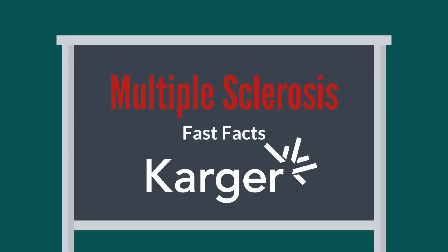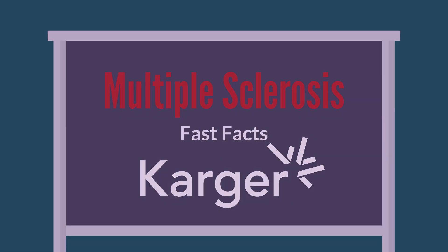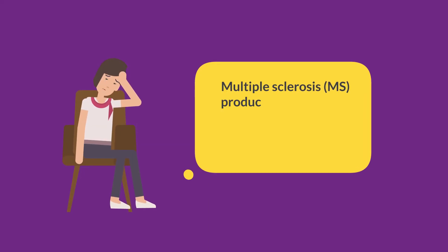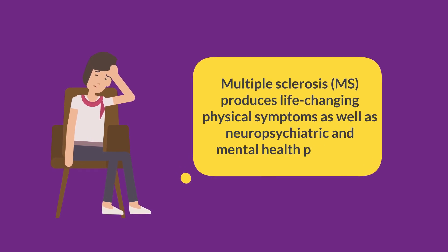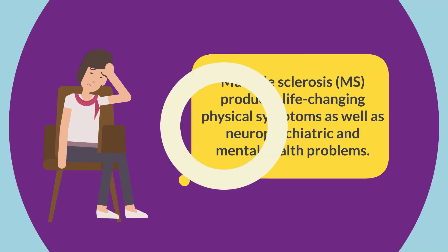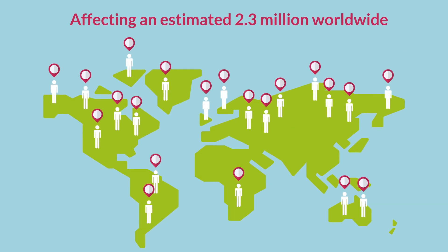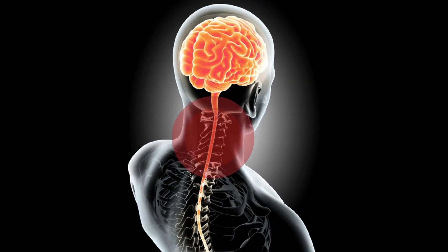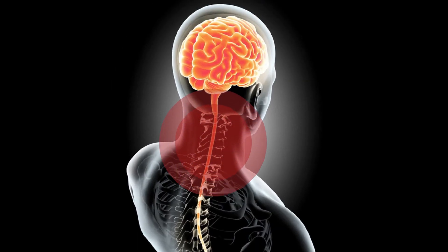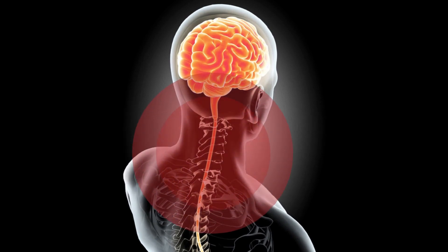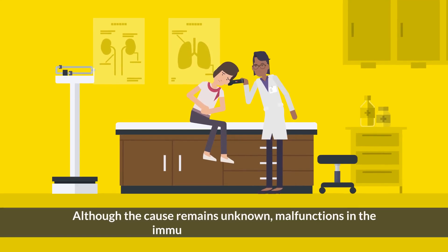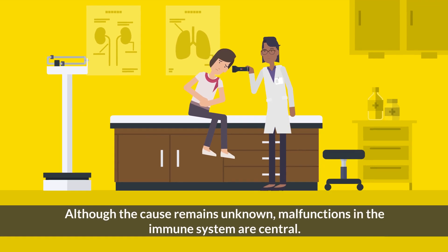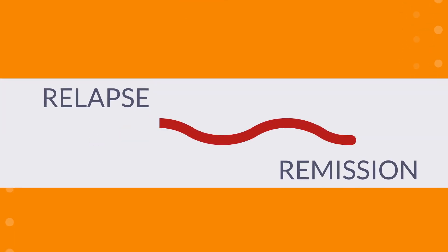Multiple Sclerosis fast facts: Multiple sclerosis, MS, produces life-changing physical symptoms as well as neuropsychiatric and mental health problems, affecting an estimated 2.3 million worldwide. It occurs due to inflammation and degeneration in the central nervous system, CNS. Although the cause remains unknown, malfunctions in the immune system are central. In most cases, MS is characterized by periods of relapse and remission.